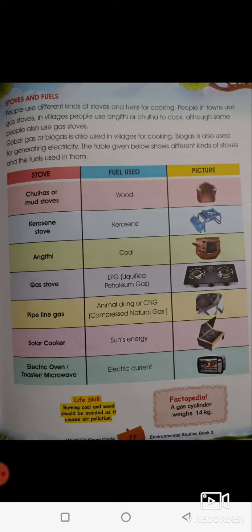The sun's energy is needed for a solar cooker — the cooker stores heat energy and we can cook food. The next is an electric oven, toaster, or microwave — electric current is used to cook food in these. We should avoid burning coal and wood as it causes air pollution. A factopedia note: a gas cylinder weighs 14 kg, so you can weigh it to check.